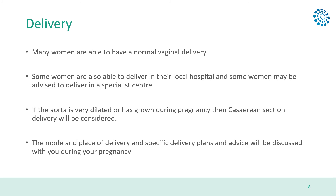Many women, including those with a mildly dilated aortic root, are still able to have a normal vaginal delivery. Some women are also able to deliver in their local centre, but some women are advised to have their antenatal care and delivery at a specialist centre. If the aorta is very dilated or has grown during pregnancy, then caesarean section delivery may be considered. Your team will discuss individual delivery plans with you at your antenatal visits, including timing and mode of delivery. This will take into account several factors including the size of your aorta, any growth of your aorta, obstetric factors such as previous obstetric complications, breech presentation and placental issues, and geographical issues such as how far away from the hospital you live.